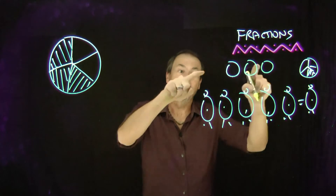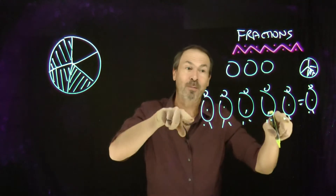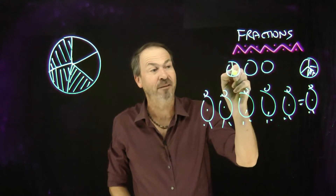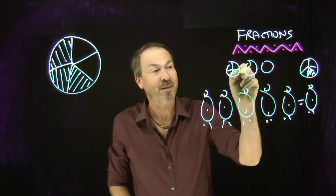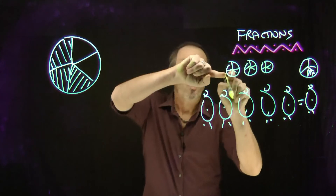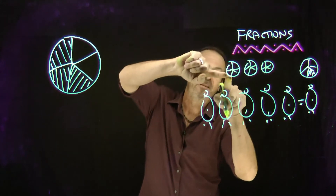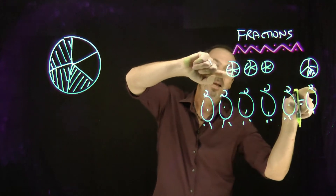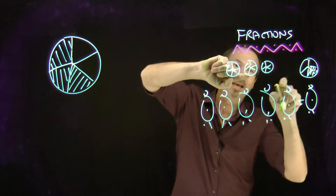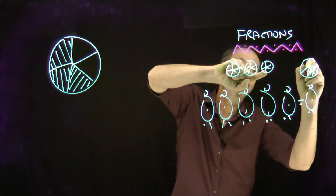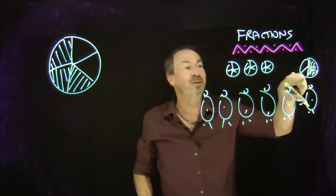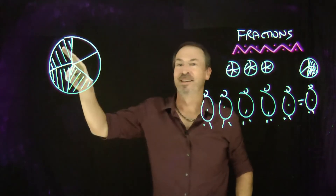In fact, if I really did share three pies equally amongst five students, what would I physically do? I'd probably chop each one into fifths — give one-fifth of this pie to a student, one-fifth of this pie to a student, one-fifth of this pie to each student. Each student is getting three copies of one-fifth.